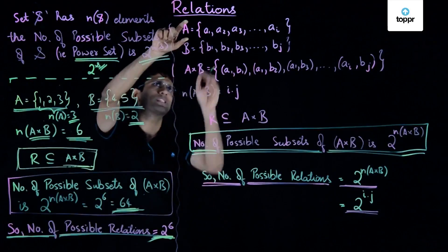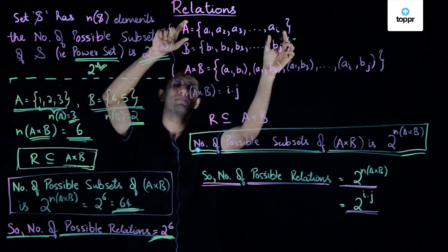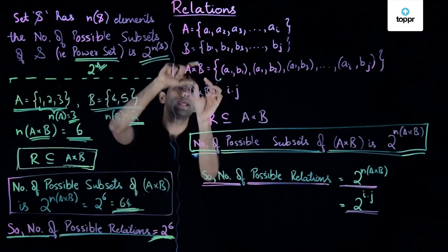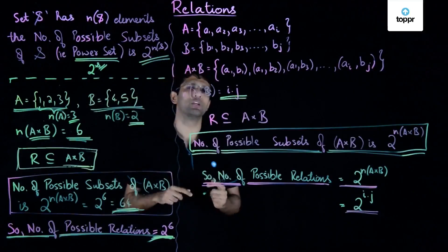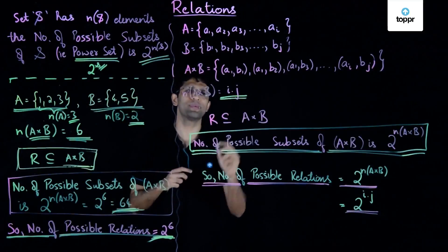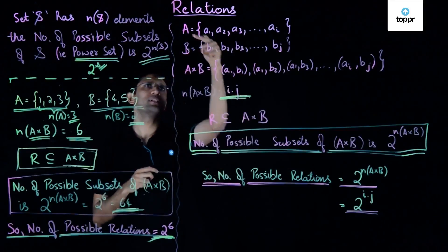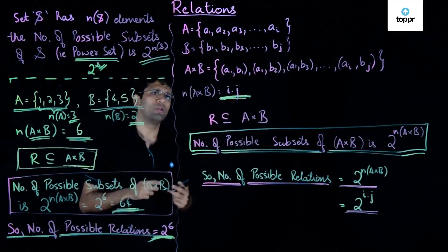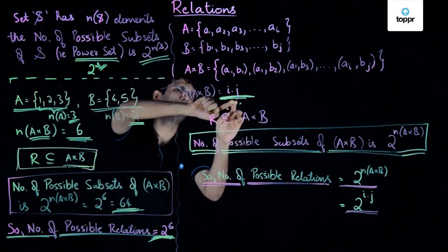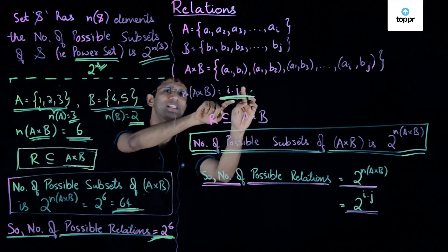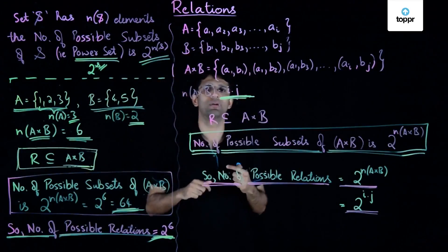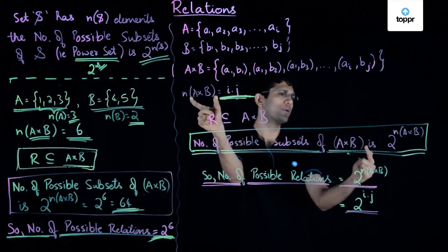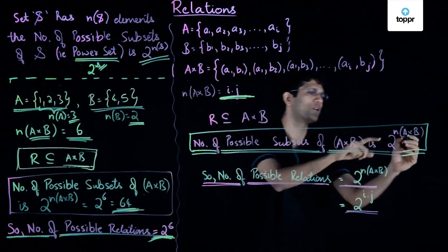Let us now see the general case. We have a set A consisting of I elements from A1 to AI, and B containing J elements from B1 to BJ. A cross B will contain I into J elements. When a set has I into J elements, the maximum possible number of subsets of that set is equal to 2 raised to I into J.